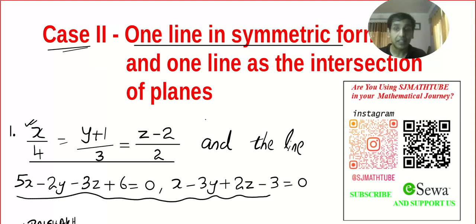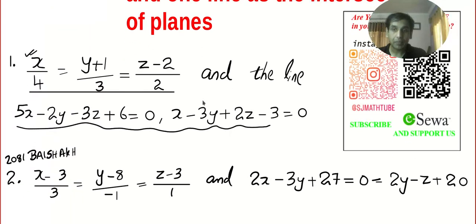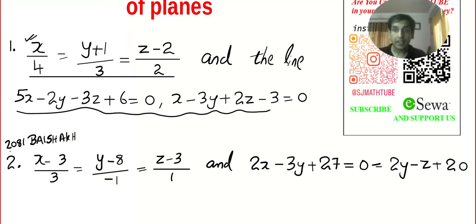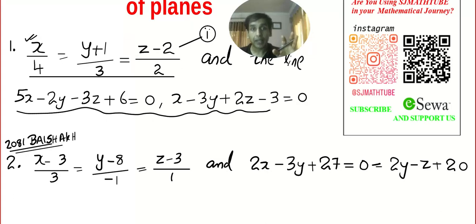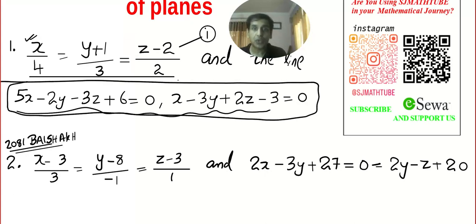Let's start with the problem. I have kept two problems here and this was asked last year in your exam. Let's do the first one. Be ready with pen and paper — it's a long process, kind of confusing now and then, so make sure you have a pen and paper with you. This is equation number one, and this whole thing is equation number two, because it's not two planes — it's the intersection of two planes, which is a line.